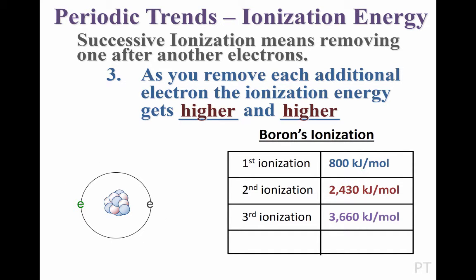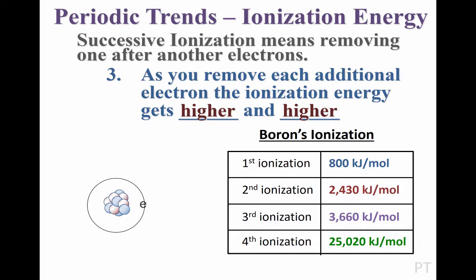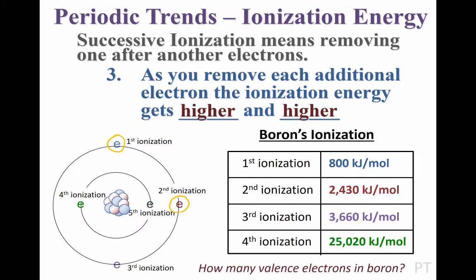The interesting thing to notice is the fourth ionization. Each successive ionization increases by around 1000 kilojoules, but the fourth ionization jumps up to 25,000 kilojoules per mole. Why the big jump? Boron is an atom with three valence electrons, and removing each of these required around 1000 to 3000 kilojoules of energy. However, once the valence electrons are gone, we have to dig into the inner shell of electrons. On the fourth ionization, we see a huge jump in ionization energy because that electron is so much closer to the nucleus.